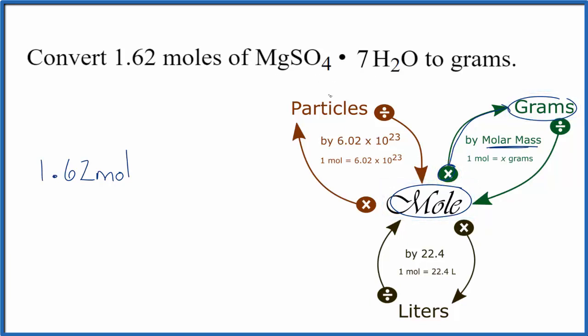We find the molar mass for magnesium sulfate heptahydrate by adding up the masses of all the individual atoms. We'd find the molar mass for magnesium sulfate and then the molar mass for water, multiply the molar mass for water by 7 because we have 7 water molecules, and add all that together.